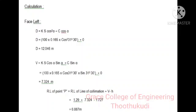Then the height of the building, that means RL of point P, is equal to RL of line of collimation (that is the benchmark reading) plus V minus H. This equals 1.29 + 7.324 - 1.727 = 6.887 meters.